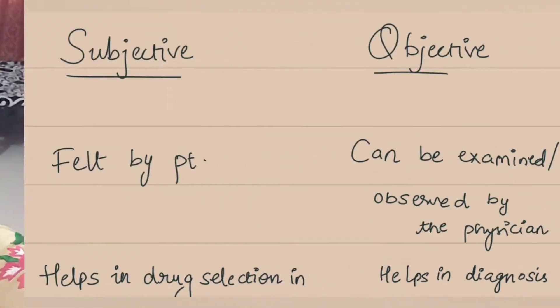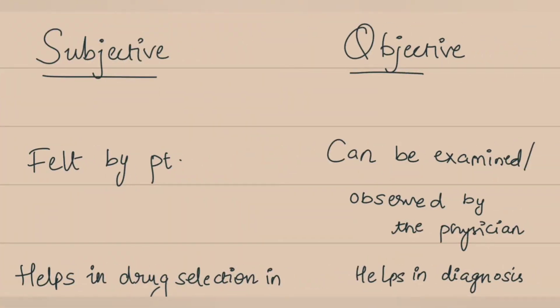Keep listening to this podcast to get a very good idea about them. So what is the difference between subjective and objective symptom? A symptom is something which depicts externally that there is something wrong happening internally. In homeopathy it may be due to a disturbed vital force. A subjective symptom, as the name indicates, is generally felt by the patient and it is not observable or examined by the physician.